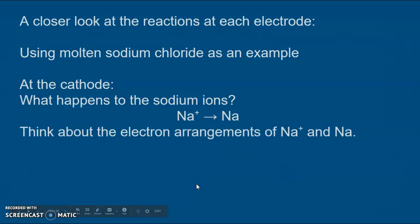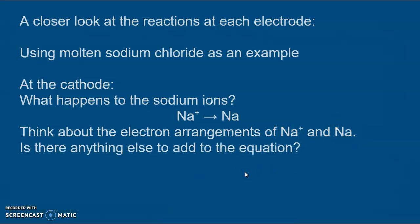Na+ from sodium chloride becomes Na. Think about the electron arrangement of Na+ and Na. Pause the video and write them down. You did pause that video didn't you? Na+ is 2,8 with a little plus outside brackets and sodium itself is 2,8,1. So to get from Na+ to Na we need to add one more electron. And so we simply write it like that.